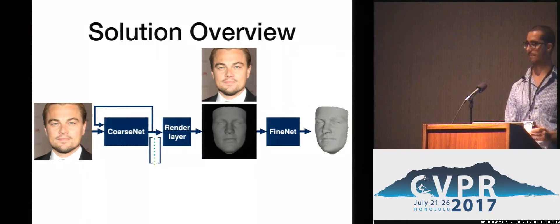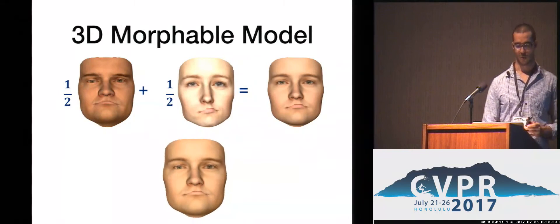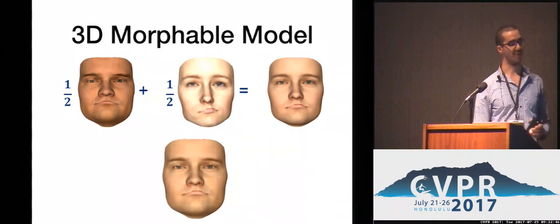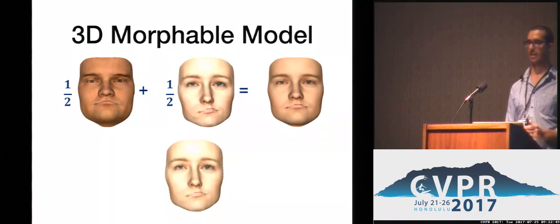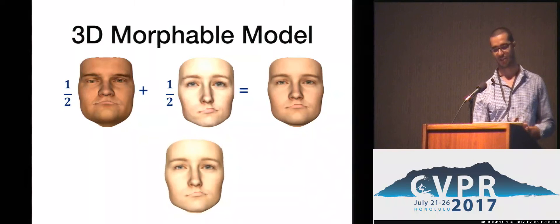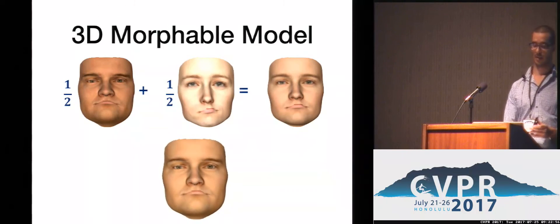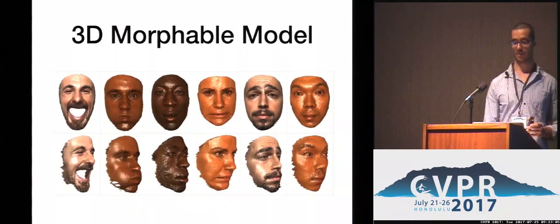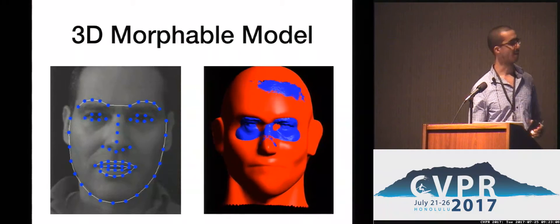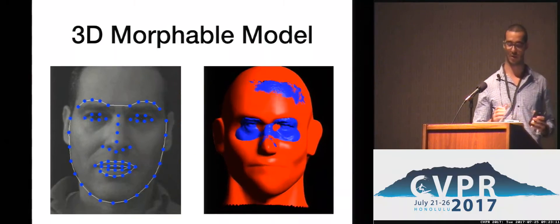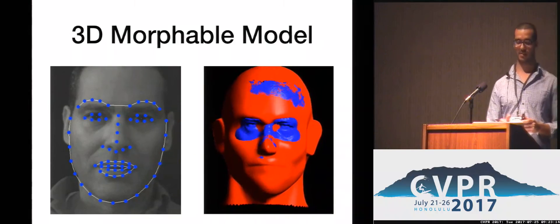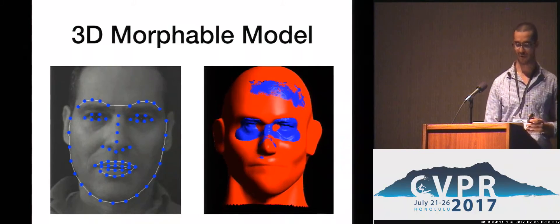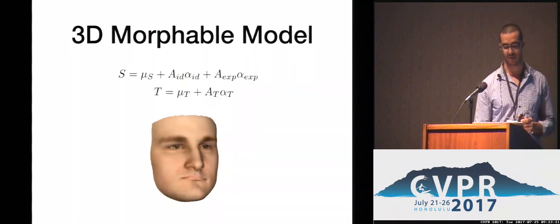Now I will describe coarse-net. Starting with background on 3D morphable models: Blanz and Vetter found that a linear combination of two or more 3D faces with texture produces legitimate faces. Thus, we can represent 3D faces in a low-dimensional linear basis. We constructed such a basis by taking a dataset of textured 3D faces and automatically computing non-rigid registration between all faces in the database, bringing them to the same space. We then constructed a linear basis representing both the shape and the texture of faces.